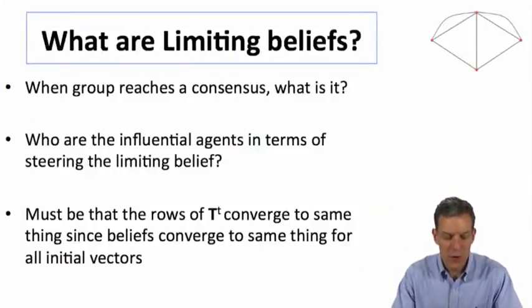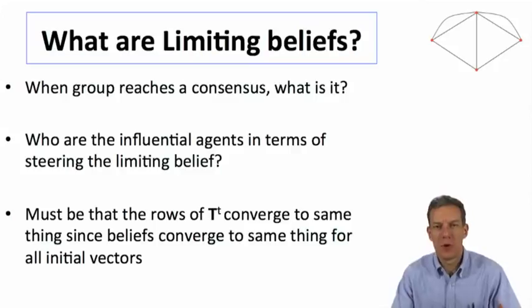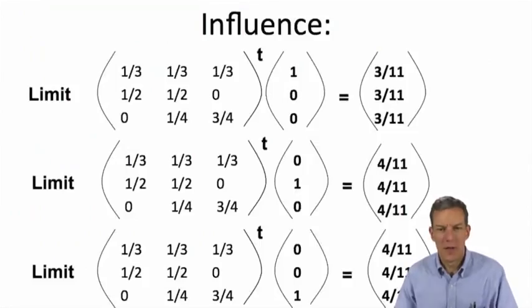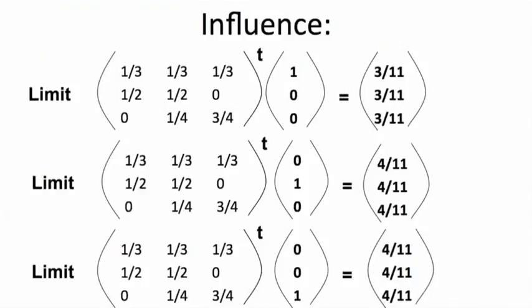In terms of these limiting beliefs, the influence is coming from the fact that these rows have to converge to the same thing for each row. In terms of what it eventually means, given that we know this is going to converge to 3/11, 4/11, 4/11, it tells us that the limit in terms of the weight it puts on whatever person one believes is 3/11. So if person one had a belief of one and everybody else believed zero, we'd go to 3/11.